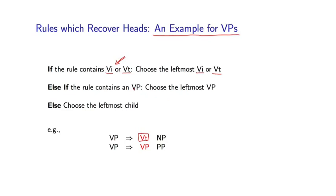On the other hand, if the rule contains a VP, choose the leftmost VP. So if we have a structure like the following, then this rule fails. The VP doesn't dominate the VI or VT. And instead, in this case, we just choose the leftmost VP as the head of the rule. And finally, we have a default case just saying if we don't find any of these categories, just choose the leftmost child.